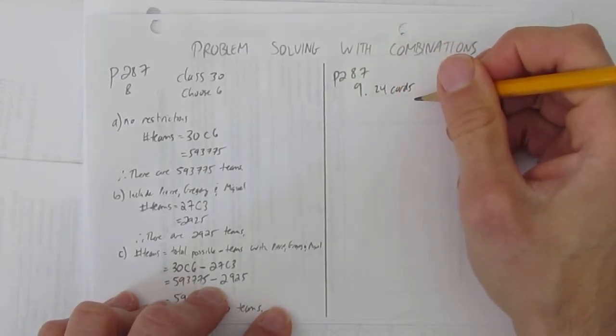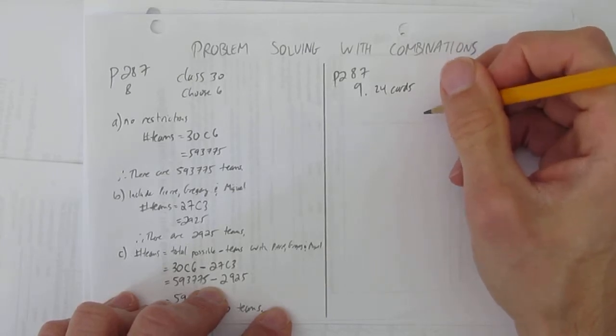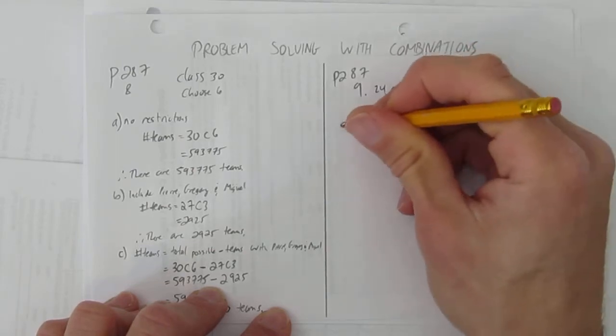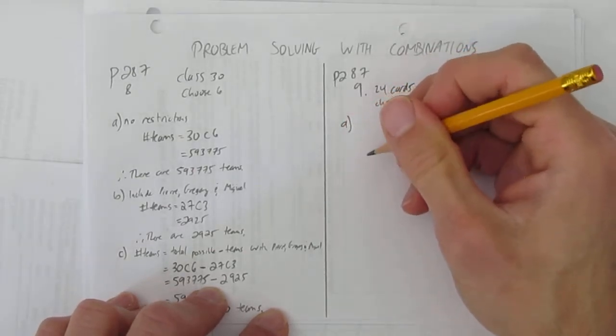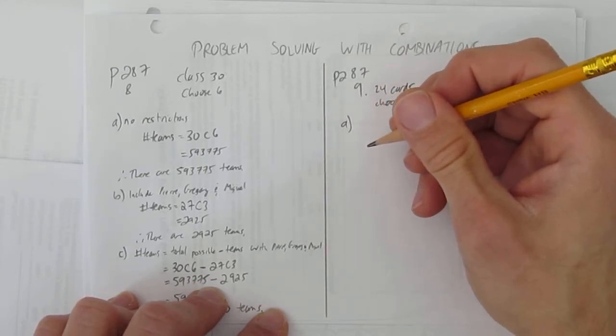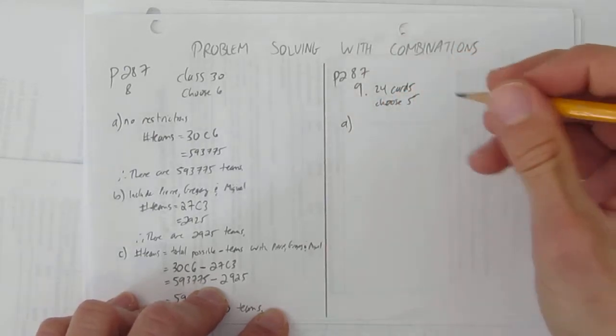Just the nines, tens, jacks, queen, king, and aces. And it wants to choose five card hands. So choose five. Part 9A, there's different parts here. 9A says what's the number of ways or number of five card hands where A, they're all red cards.